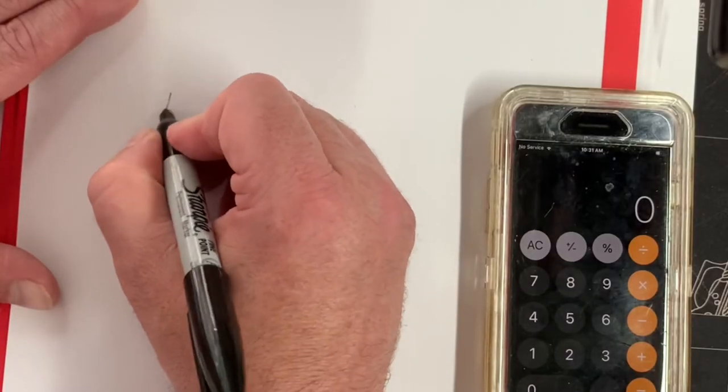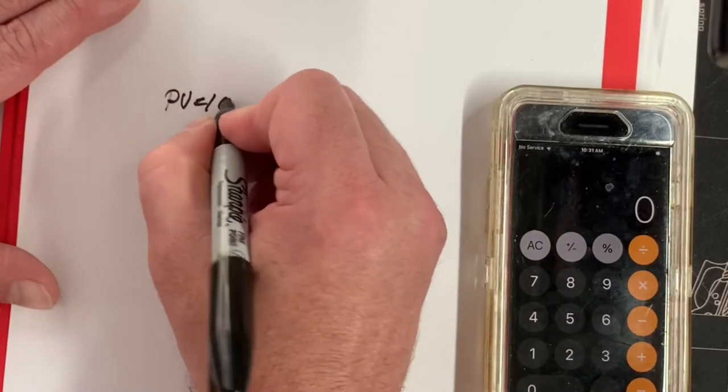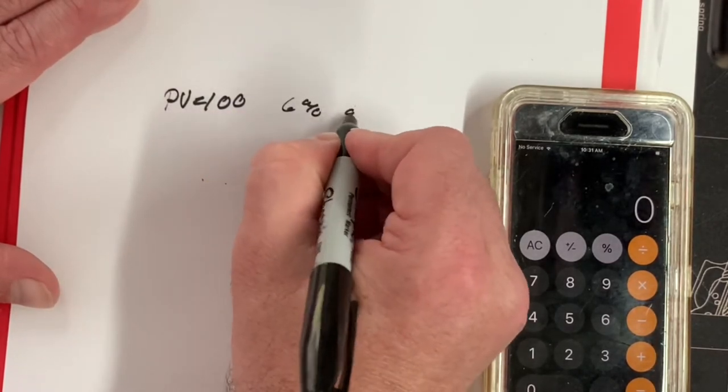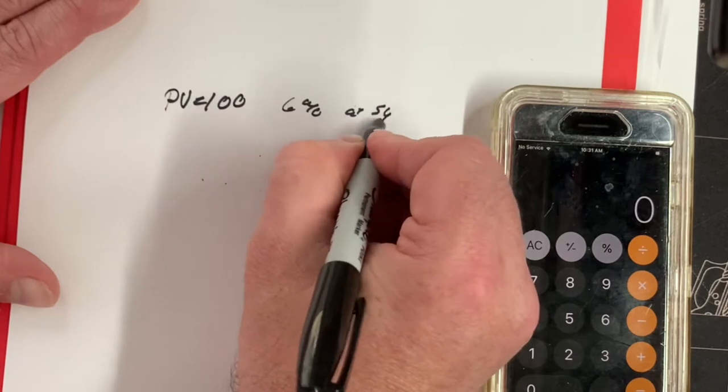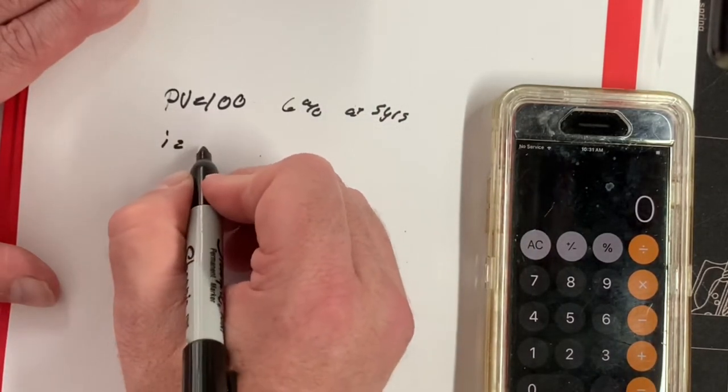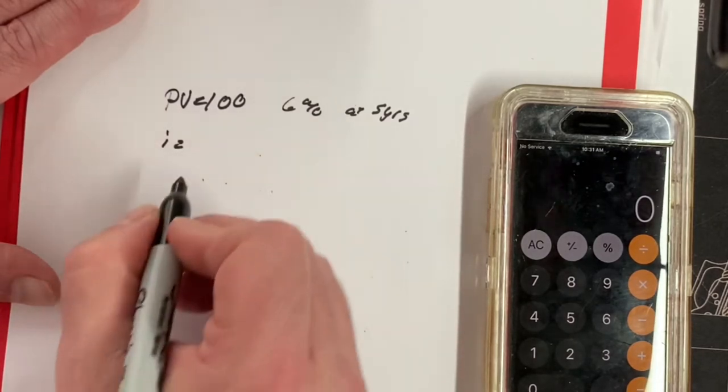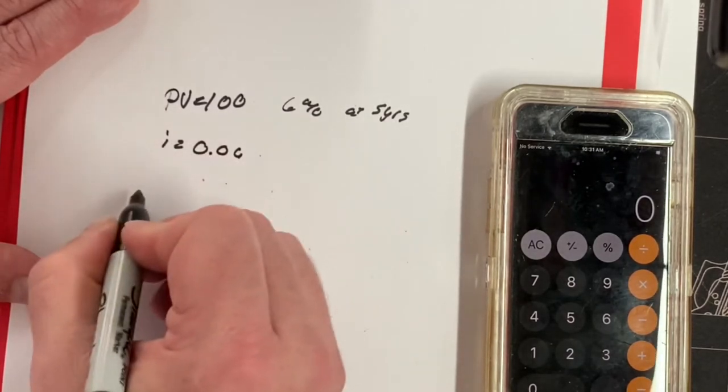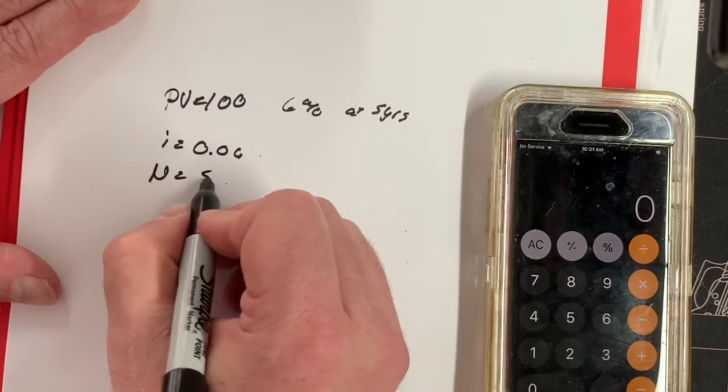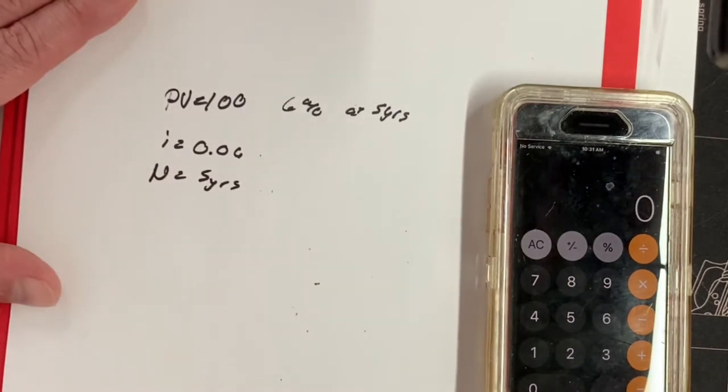Okay, so we're going to take PV, present value, equals 100. And we're doing this deal at 6% at five years. So what we're going to do is we're going to take I equals, we're going to turn it to 6% into a decimal, 0.06. We're going to take five years, put it as n for our formula. Now we're ready to rock and roll.